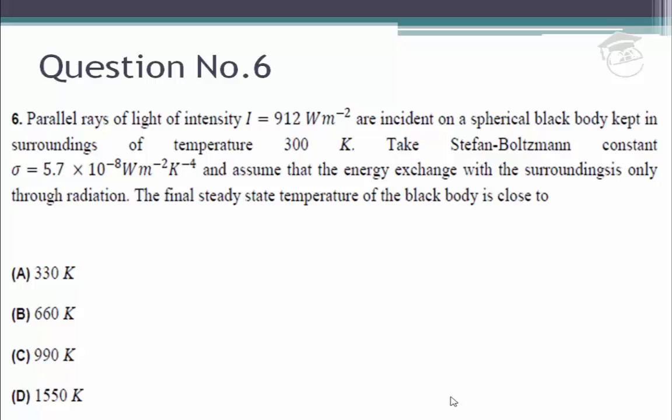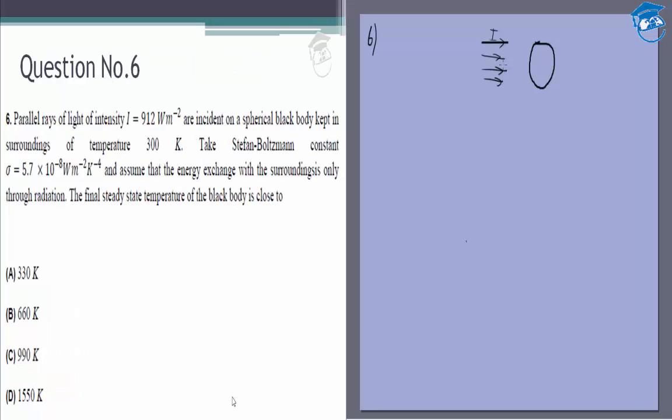There are parallel rays of a particular intensity I reaching this sphere. The sphere is a spherical black body, so along with this incident radiation, it is also absorbing radiation from the surroundings and emitting radiation. We assume that the energy exchange with surroundings is only through radiation. What is the final steady state temperature of the black body?